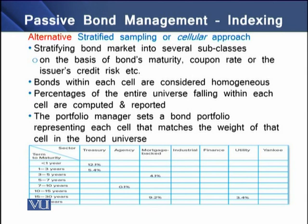Next, the bonds within each cell are considered homogeneous because we are classifying bonds according to certain parameters. Next, the percentages of the entire universe falling within each cell are computed and reported, as we can see in the diagram at the bottom of the screen. And finally, the portfolio manager sets a bond portfolio that represents each cell and matches the weight of the cell in the entire bond universe.